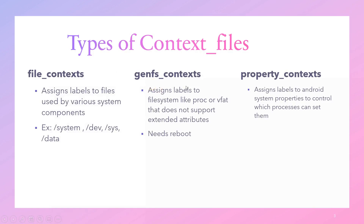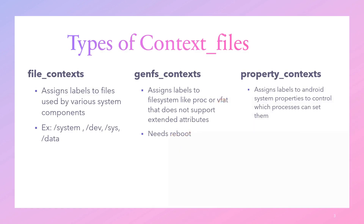Next is GenFS context. It assigns labels to file systems like proc or vfat that do not support extended attributes. In easy words, GenFS context is used to label all the file systems — whereas file context is used to label a particular file, GenFS is used to label a particular file system. Vfat is a virtual file attribute table used during system booting, and any changes to it need a reboot or unmount and remount, as it is loaded as part of the kernel.